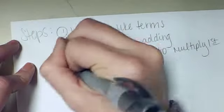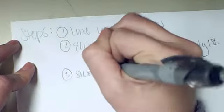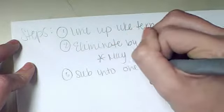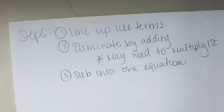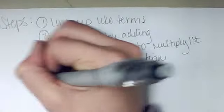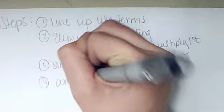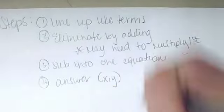The next step is to sub into one equation. So use that answer that you got in step 2 to plug it into an equation and solve for the other variable in step 3. And step 4 is to write your answer as an ordered pair. That would be like x, y.